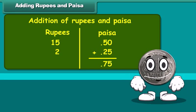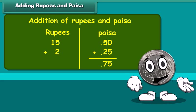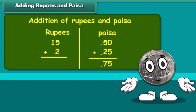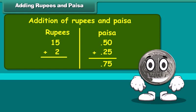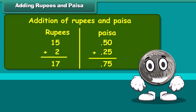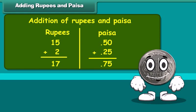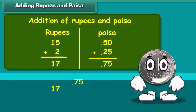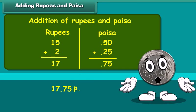Now add numbers in the rupees column. 15 plus 2 is 17. Therefore, the sum is 17 rupees and 75 paisa.